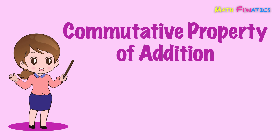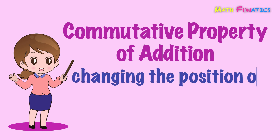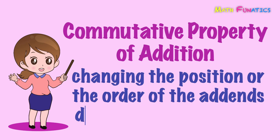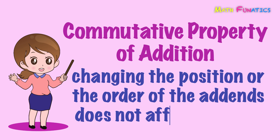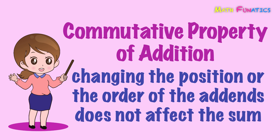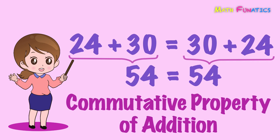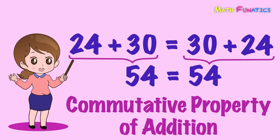This property is called the commutative property of addition. It states that changing the position or order of the addends does not affect the sum. This example shows the commutative property of addition.